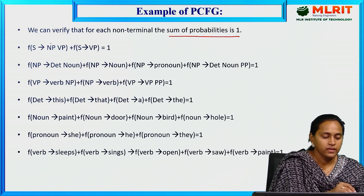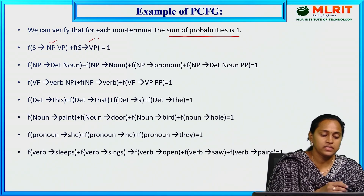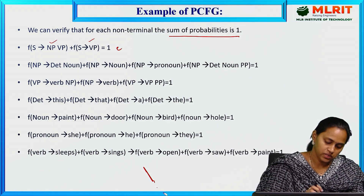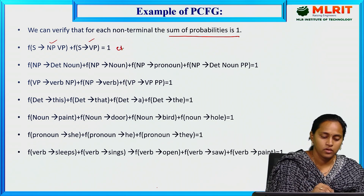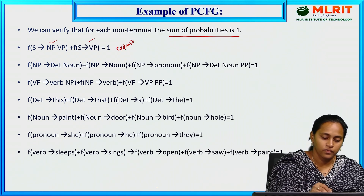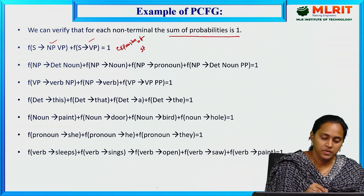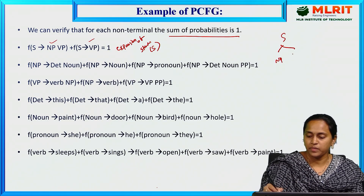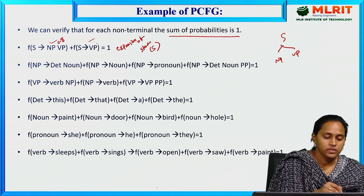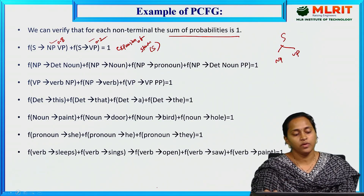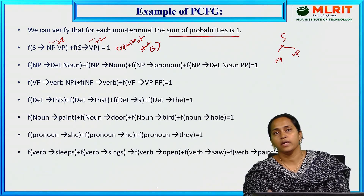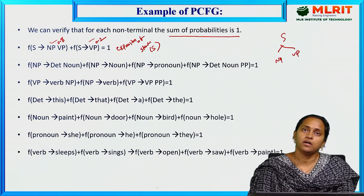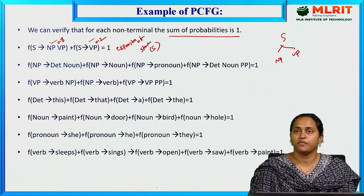These are the rules: S → NP VP and S → VP. This is the expansion of structure S. For example, S → NP VP has probability 0.8, and S → VP has probability 0.2. So 0.8 plus 0.2 equals 1 — meaning 80% noun phrase and 20% verb phrase.